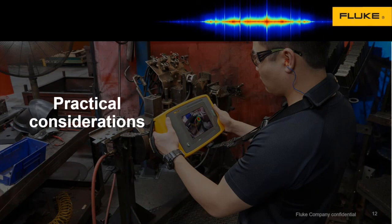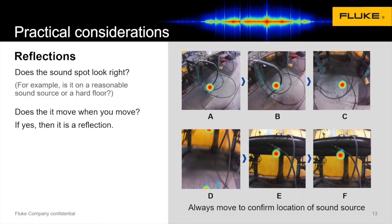Now let's get into some of the practical considerations to give you a feel for how this camera operates out in the factory or field. One thing you've got to be mindful of when using this device is reflections. What you're looking for when scanning for a leak is targets that show up on the screen and stay on the screen. If they pop in and out, those are just echoes or sound bouncing off different surfaces — they're not actually leaks. Unless you see a target that stays on the screen, it's likely a reflection.